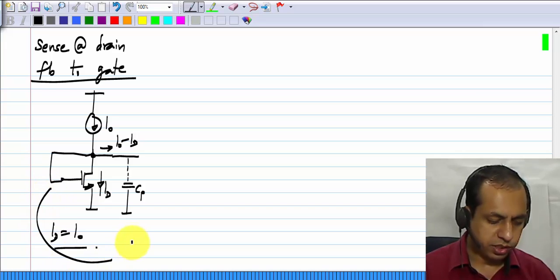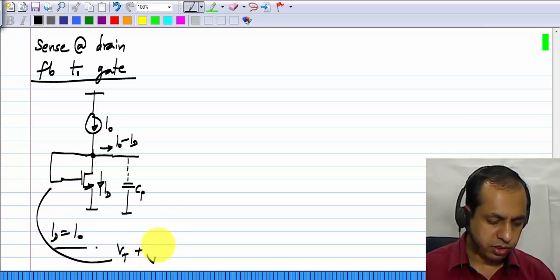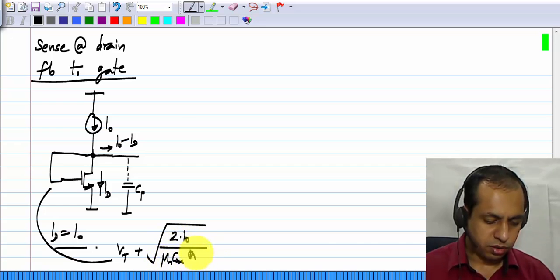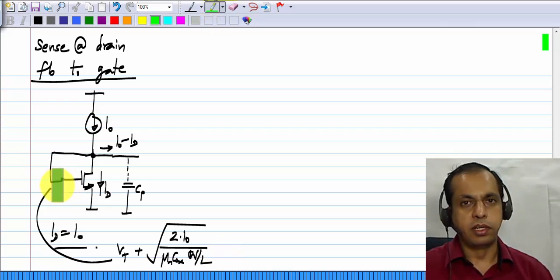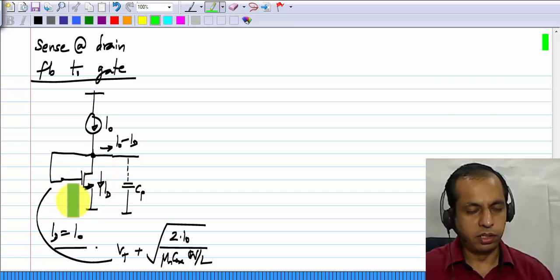The gate voltage will get adjusted to the threshold voltage plus 2 times I naught by mu n C ox W by L. That is, it is exactly like varying the gate voltage until the current in the MOS transistor becomes exactly equal to I naught. Then any variation here will stop.